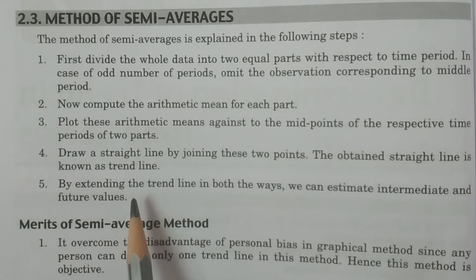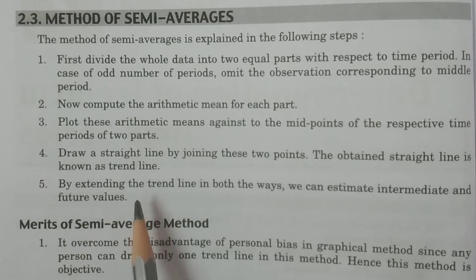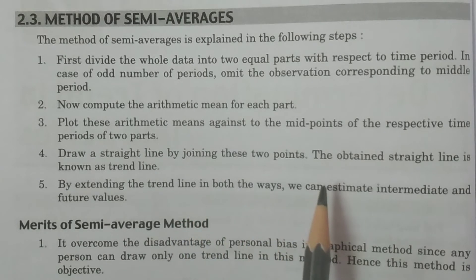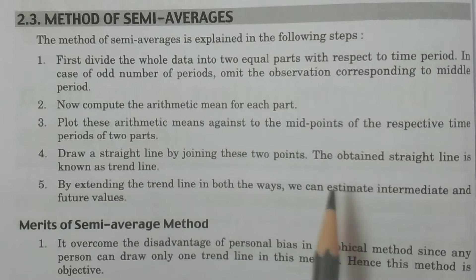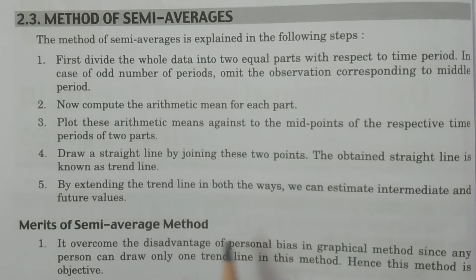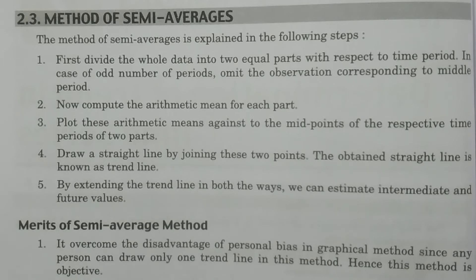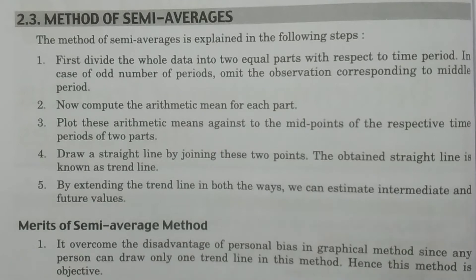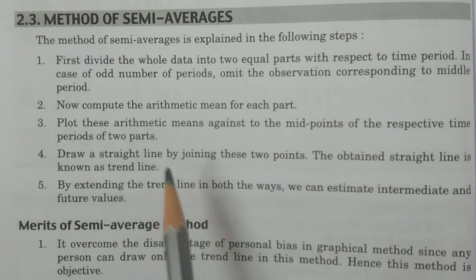It is an approximate trend line, not exactly as will be discussed with the straight line method. The straight line using the principle of least squares will give the best trend line. So this method gives us an approximate trend line — that is the difference or improvement of the principle of least squares over this particular method.